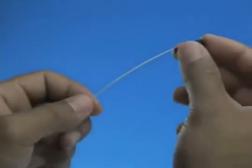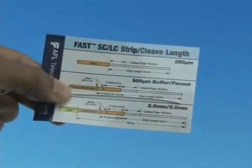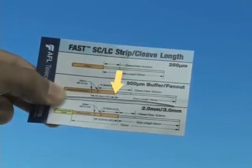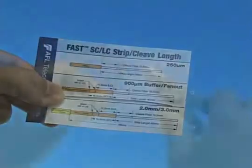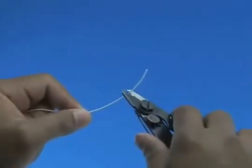900 micron fiber termination. Slide the 900 micron boot onto the fiber. Refer to the strip template and mark the 900 micron fiber at 40 millimeters from the end of the fiber. Strip 40 millimeters of 900 micron coating from the fiber.